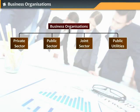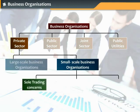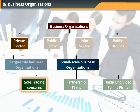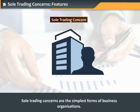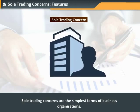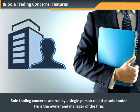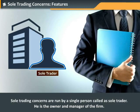The small-scale business organizations of private sectors are divided into three subtypes. These include sole trading concerns, partnership firms, and Hindu undivided family firms. Let us understand about sole trading concerns and their disadvantages. Sole trading concerns are the simplest forms of business organizations, run by a single person called a sole trader, who is the owner and manager of the firm.